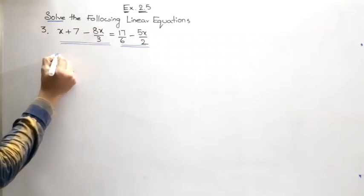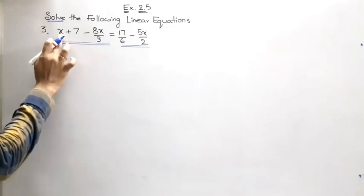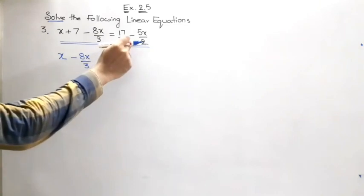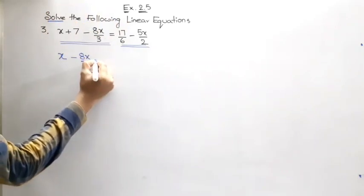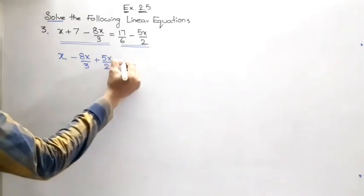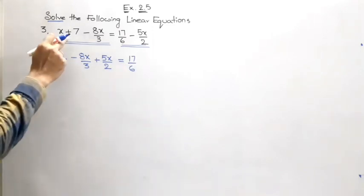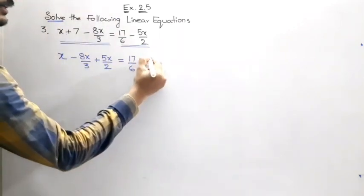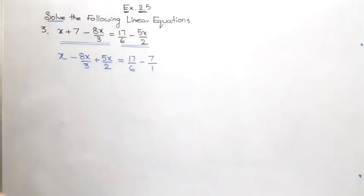That means we don't worry about how many terms they give. Let them give five terms or only one term one side or two terms the other side. Irrespective of the number of terms given, we must be able to solve for the value of variable. Here the variable is x. Now as we do, we are going to keep the like terms at one side. Here x and minus 8x by 3 is the second term. Here on the RHS we have minus 5x by 2. That minus 5x by 2 if we transpose to the other side, that means to the LHS it will become plus 5x by 2.